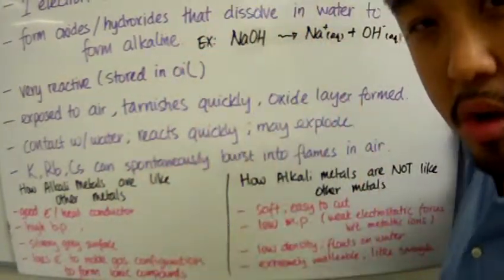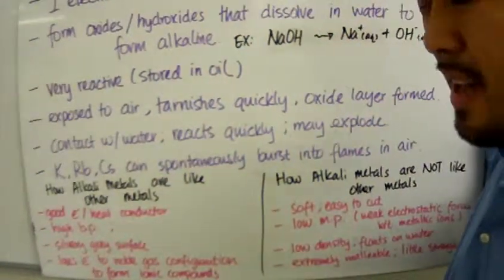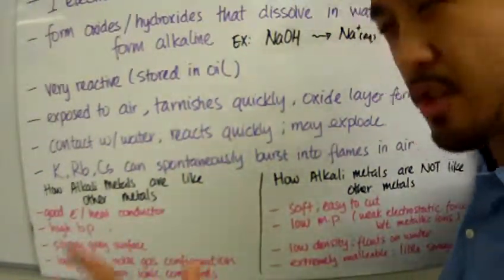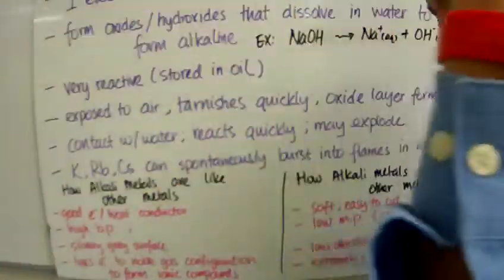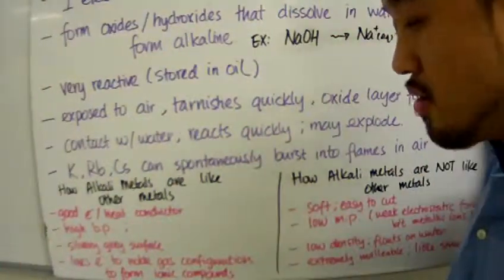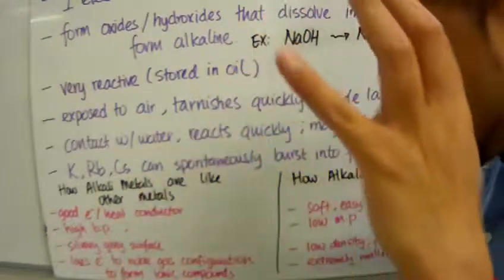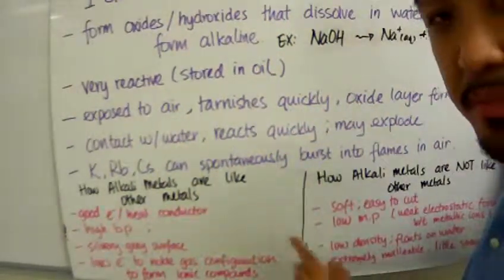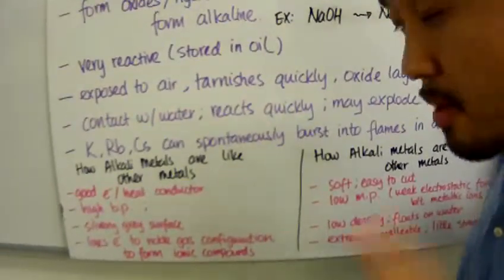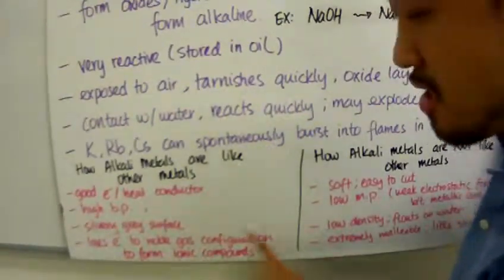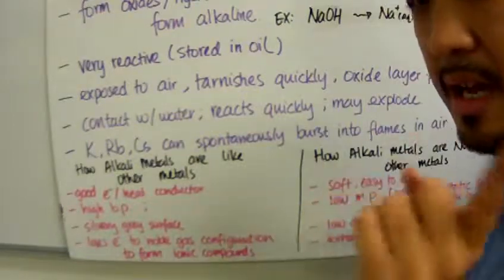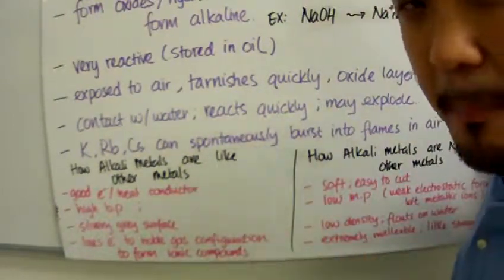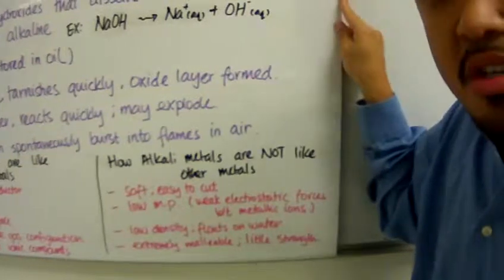Like all metals, group 1 elements lose electrons to form noble gas configurations when they form ionic compounds.